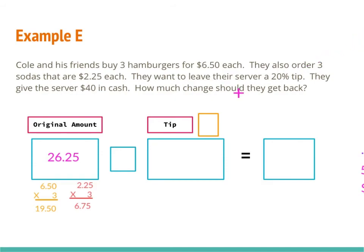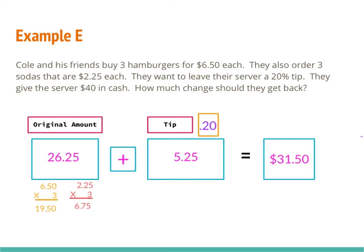I'm going to multiply 0.20 times $26.25, and when I do that I end up with $5.25. Then I add that together to get my total bill: $26.25 plus $5.25 is $31.50. However, that's not what the problem asked — it says they give their server $40 and want to know how much change they get back. So I take $40 minus $31.50, and that gives me $8.50. How much change did they get back? $8.50. That's my final answer.